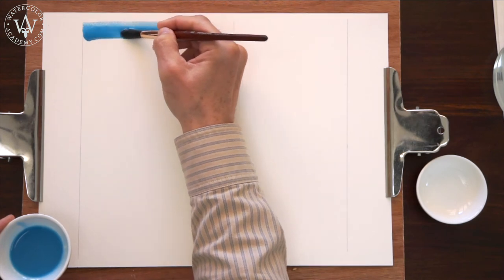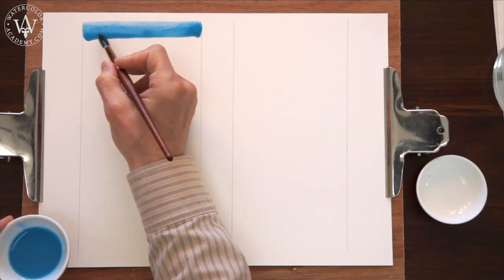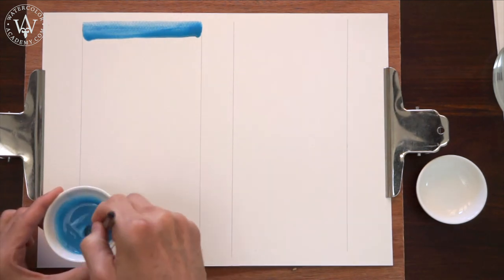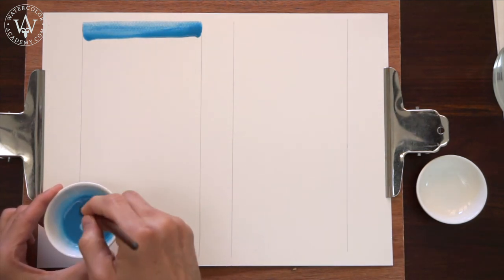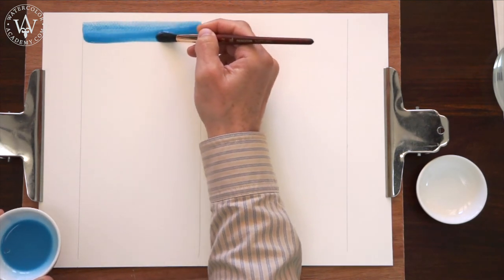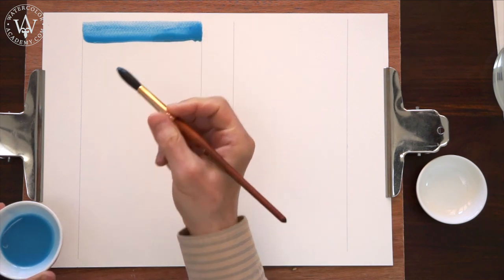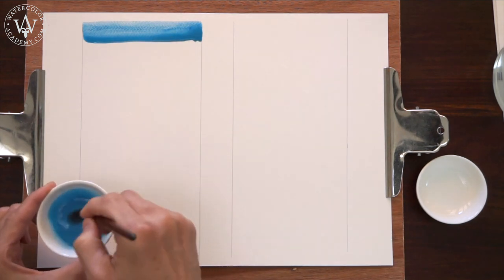To begin with, I will paint with horizontal brush strokes. I load the first stripe with enough paint to form a bead. Every next brushstroke is overlapping the previous one, and the bead flows down from one stripe to another.